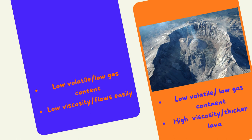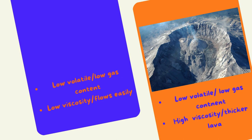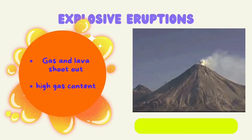If something has low volatile and low gas content, but a high viscosity or thicker lava, then the magma will build up inside of the volcano, unable to escape, and make what is known as a lava dome.